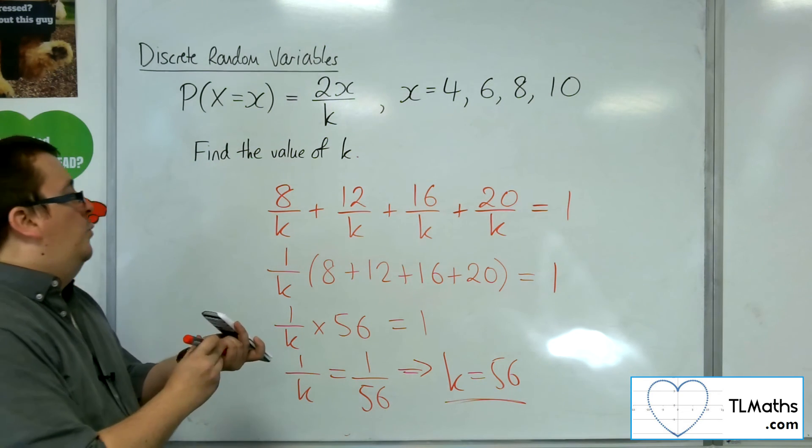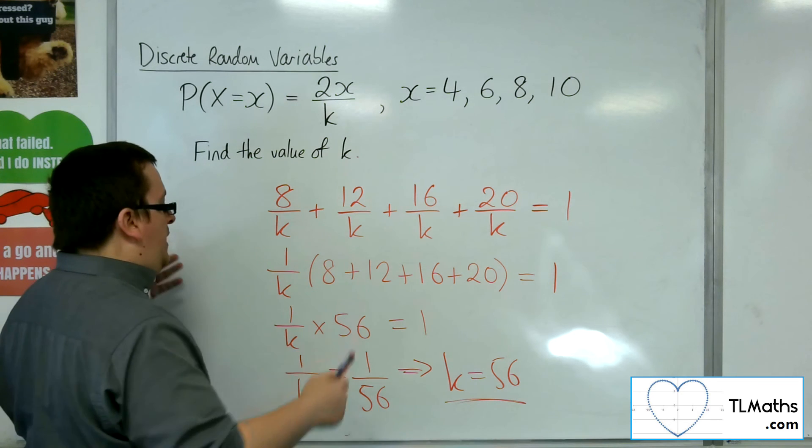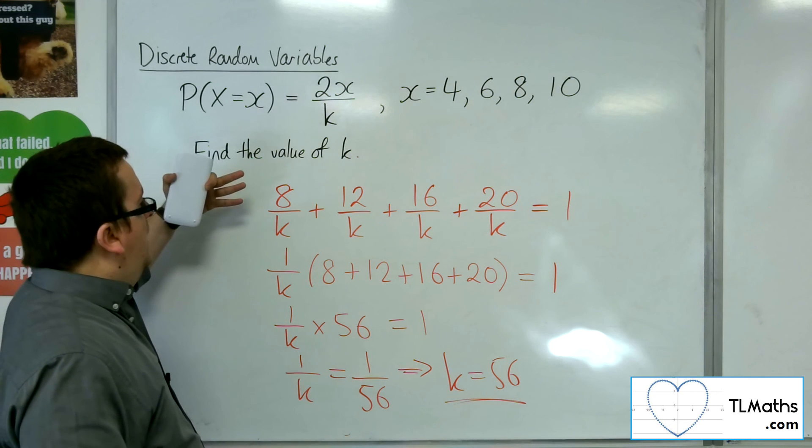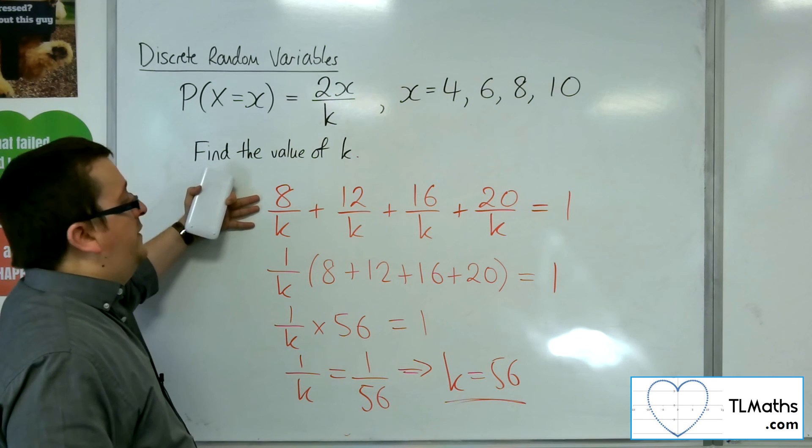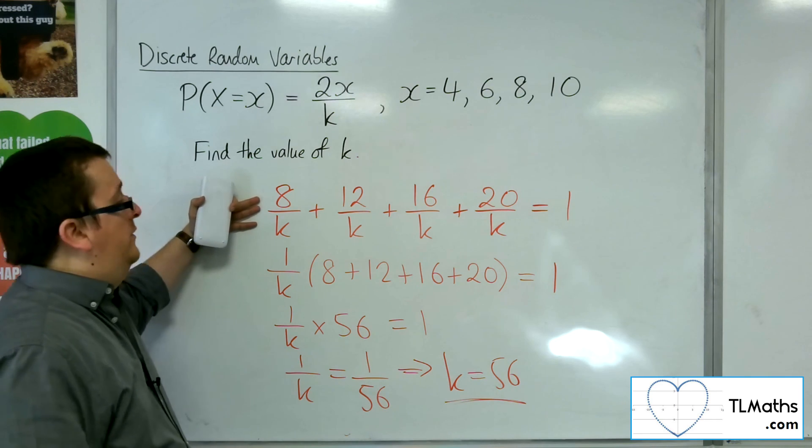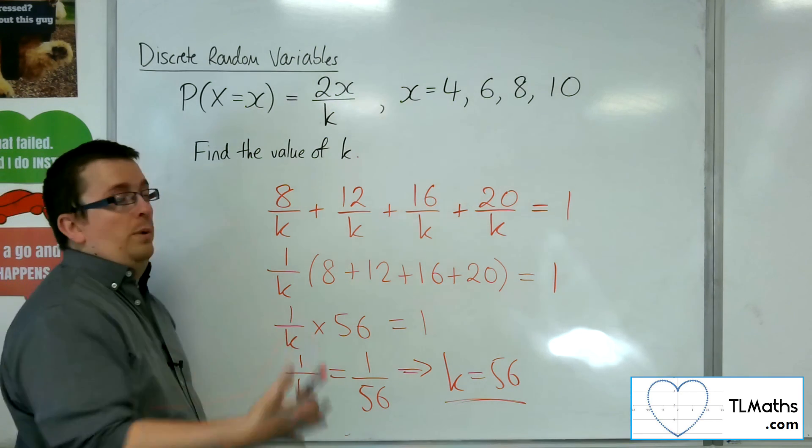So, that's how we can do that. I mean, if you're happy going straight from this to 56 over k is equal to 1, and so k must be 56, that's perfectly fine also.